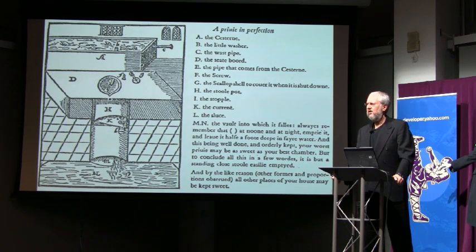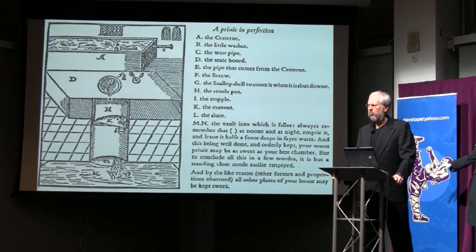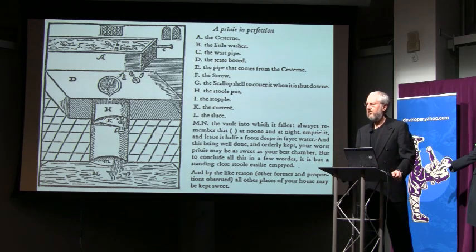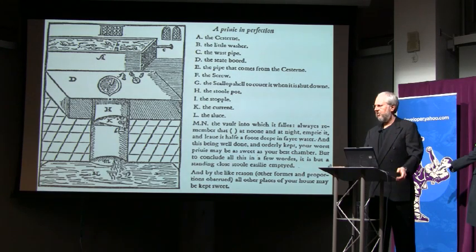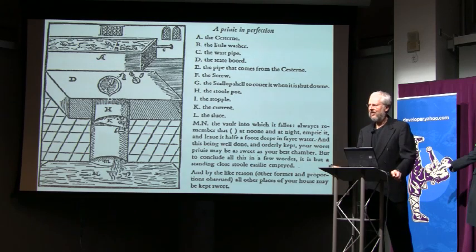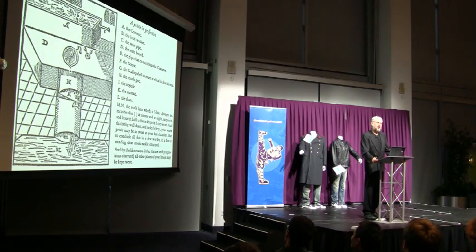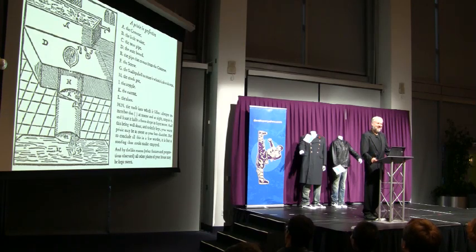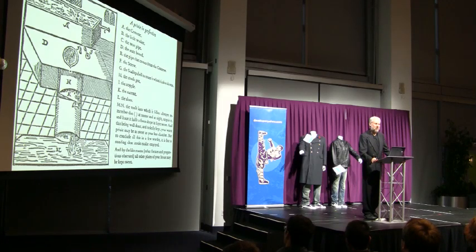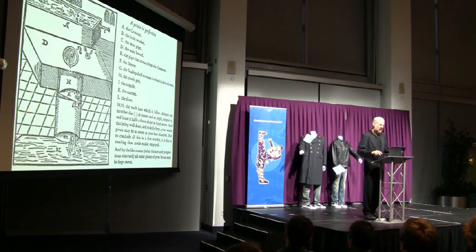Queen Elizabeth herself was quite annoyed at the way her castle smelled and complained about it quite bitterly. At the time, they hadn't developed germ theory yet, so they believed those smells were actually the cause of disease. This invention promised to be the solution to that. He built one of these devices for the queen, and she didn't like it — because of the noise it made, announcing to everybody in the castle that the queen had just done her royal business. She liked that even less than the threat of disease. Once we had germ theory, we knew it was actually caused by fecal contamination of the drinking water.